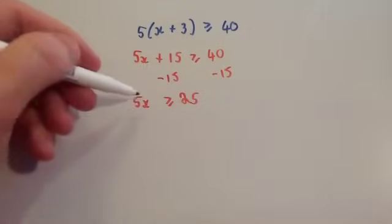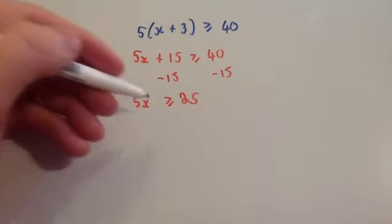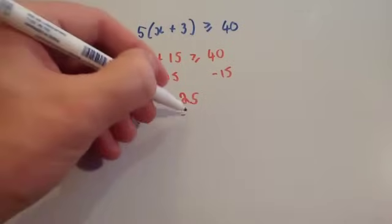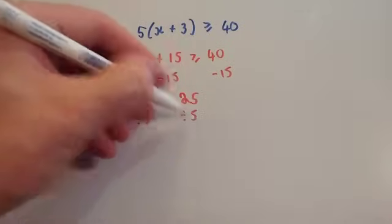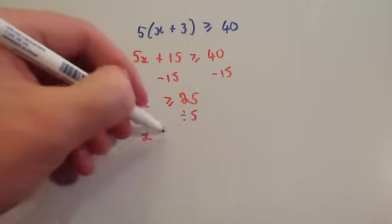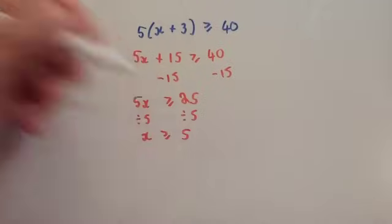You want to get rid of the times by 5, so you're going to divide both sides by 5, and that's going to leave you with x is bigger than or equal to 5.